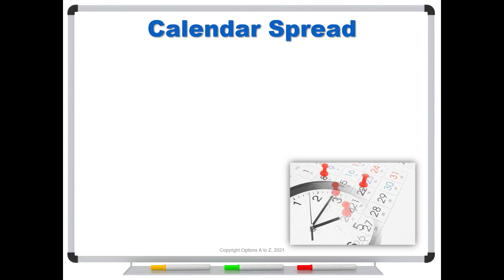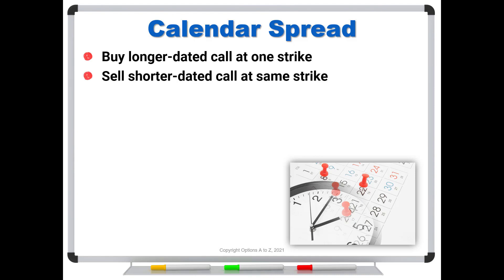For a quick review, remember that a calendar spread is also called a time spread. You're going to buy a longer dated call at one strike and sell a shorter dated call at the same strike. Because calls are puts and puts are calls, you could certainly use puts as well, but both options have to be the same type — either both calls or both puts.